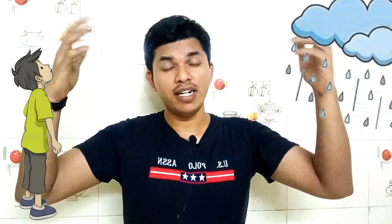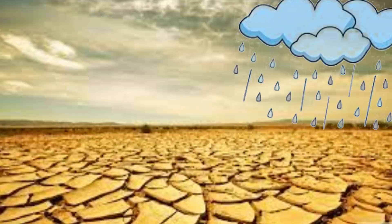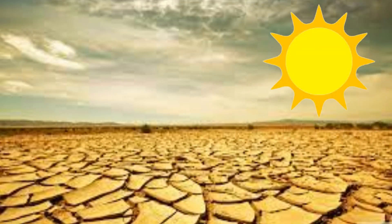Imagine if we don't have a tree and water from rainfall falls on the soil — what will happen? The water settles on the top layer of the soil, and due to the sun's heat the water gets evaporated. Here the water doesn't go underground, which means there is no recharge of underground water.